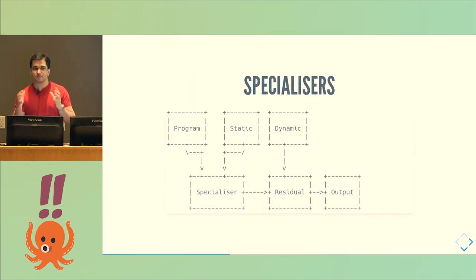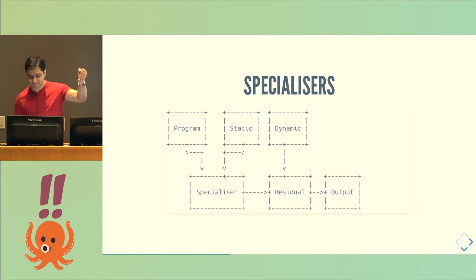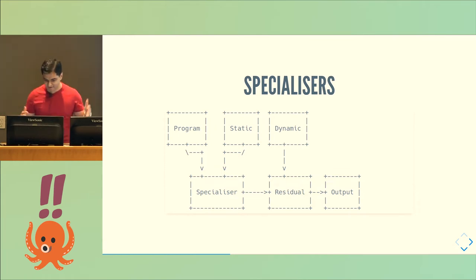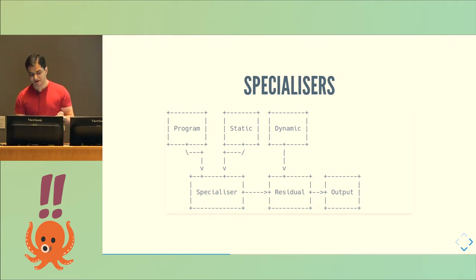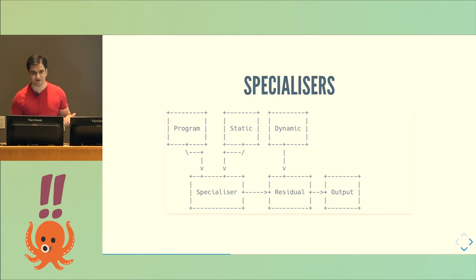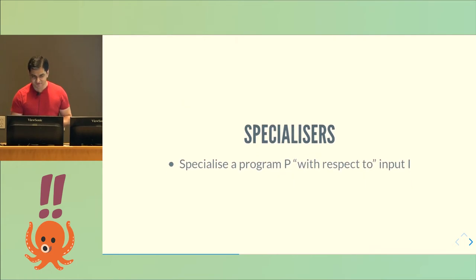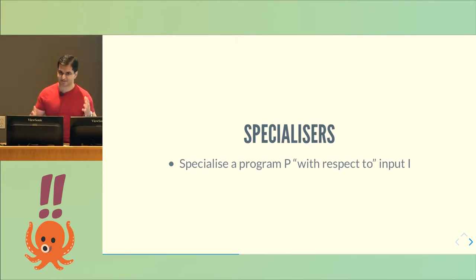The program that does this is called a specializer. A specializer takes a program and some static input, jams the static input into the program, inlines and unrolls and does some other simple program transformations, and gives you a residual program that can take only the dynamic input and produce the same output the original program would have produced given both the static and dynamic input. We say a specializer specializes a program with respect to some input.